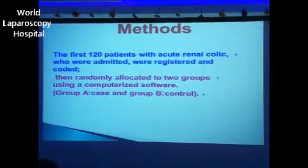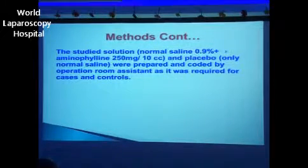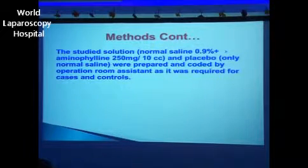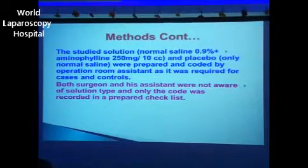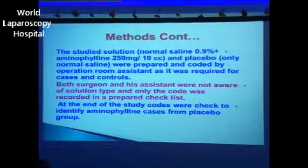The first 120 patients with acute renal colic who were admitted were registered and coded, then randomly allocated to two groups using computerized software: Group A (case) and Group B (control). The study solutions — normal saline with aminophylline, and placebo-only normal saline — were prepared and coded by the operation room assistant. Both surgeon and assistant were not aware of the solution type; only the code was recorded in a paper checklist. At the end of the study, codes were checked to identify aminophylline cases from placebo groups.